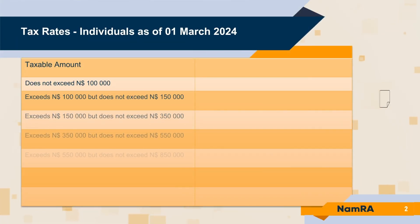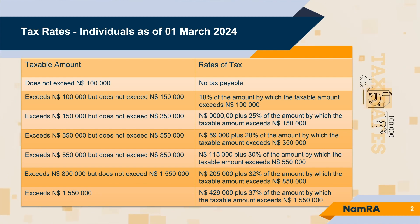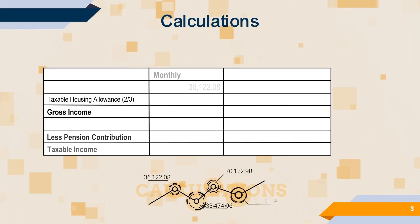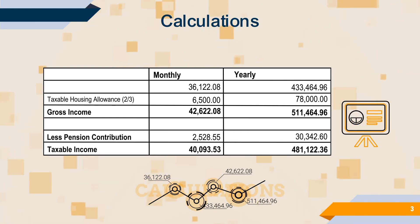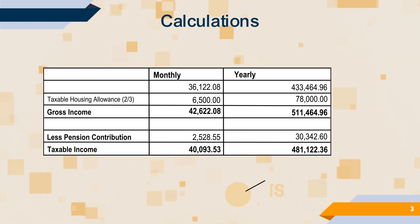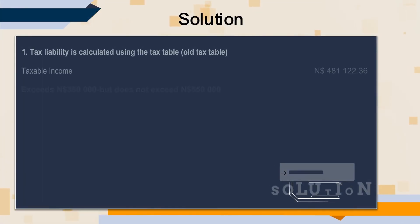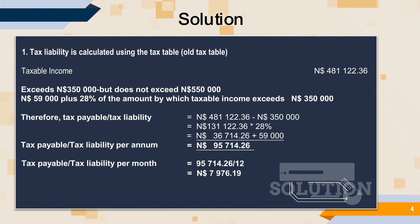We'll now make use of the new tax rates or the new tax table. Our taxable income remains at $481,122.36 as calculated previously. When we go to the new tax table, you then see that you fall in the bracket that says your income exceeds $350,000 but does not exceed $550,000. Your tax rate remains as it was.